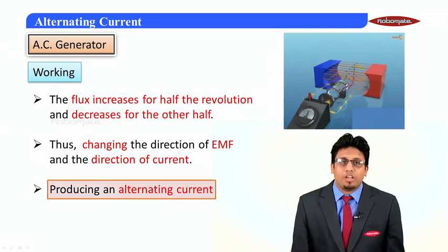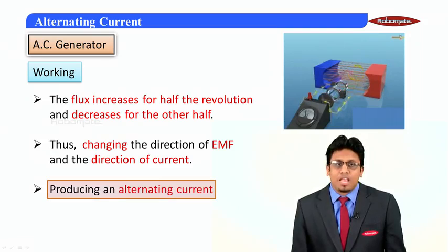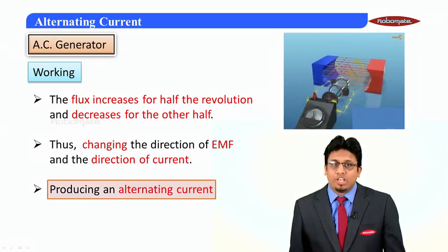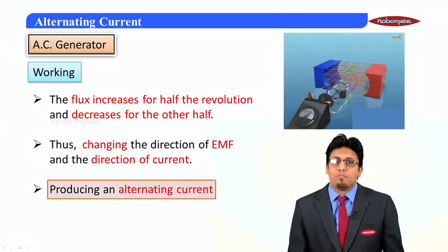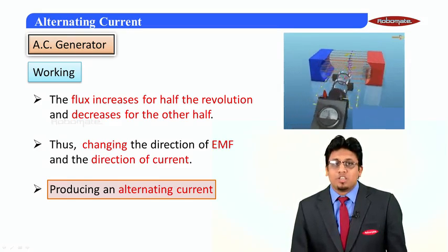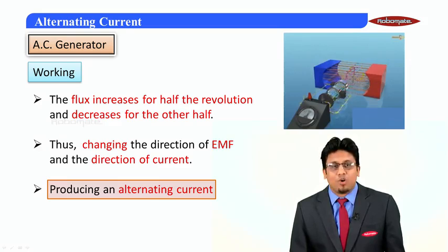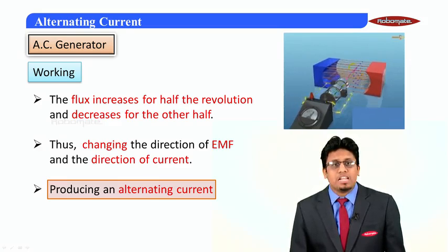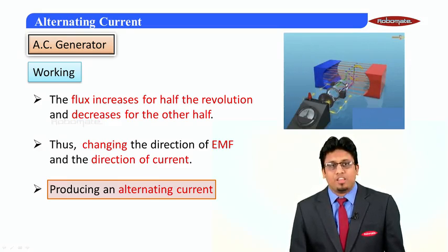Now, this alternating current is produced through the area vector changing its angle with the magnetic field. In the next module, we will discuss the working and construction of what is called a DC generator. Thank you.